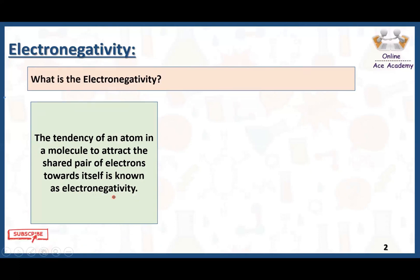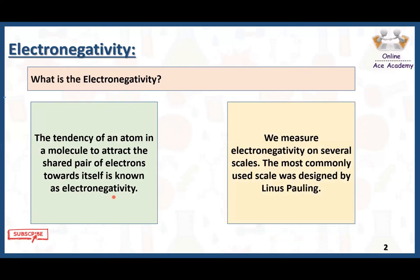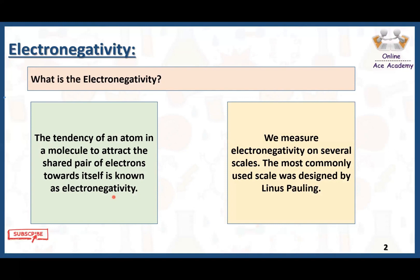We can measure electronegativity on several scales. The most commonly used scale is the Pauling scale, which was designed by Linus Pauling.